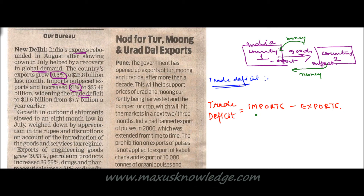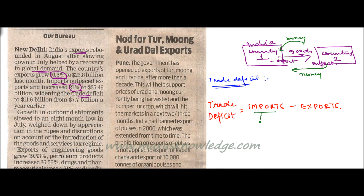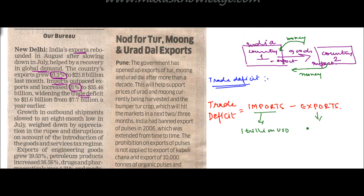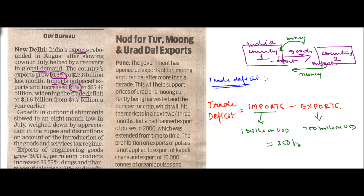Let us take a quick example. Let us say the value of imports for a country is equal to 1 trillion US dollars, whereas exports equal 750 billion US dollars — so it is importing more and exporting less. The trade deficit is imports minus exports: 1 trillion minus 750 billion equals a trade deficit of 250 billion US dollars.